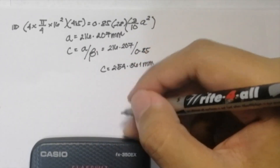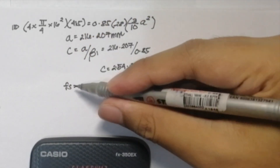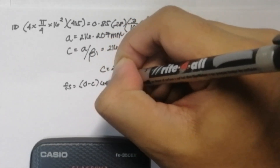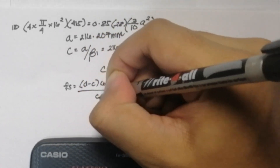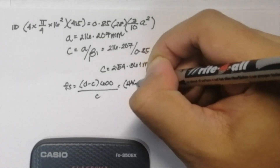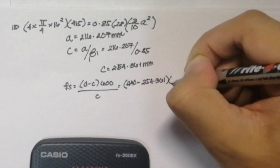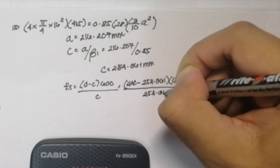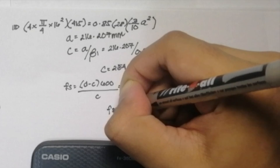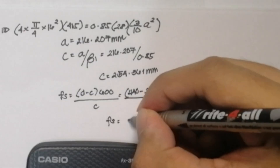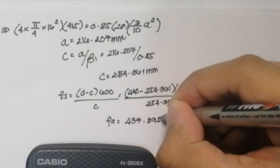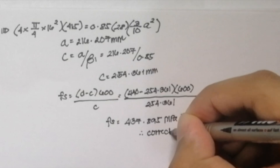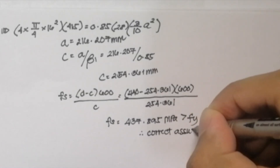We should check our theoretical stress in the steel: Fs = (D − C)·600 / C = (440 − 254.361)·600 / 254.361 = 437.895 MPa. This value is greater than the yield strength of 415MPa, so our assumption that Fs > Fy is correct.